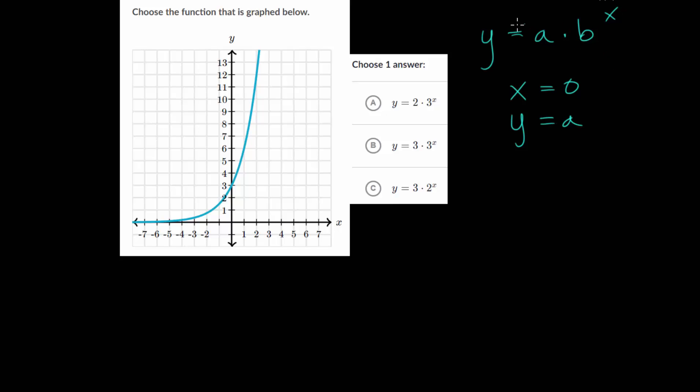We also know that B, that is our base, or it is our growth or decay rate, or we can say our decay or growth factor. We'll go with rate in this case. We essentially just need to pick a couple points on the graph and then figure out our A value, our starting value, and whatever our base is.